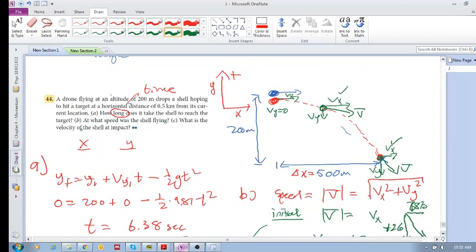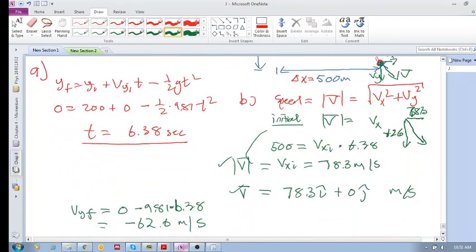And this is answering B and C. At what speed was the shell flying? What is the velocity of the shell at impact? All right, cheers.